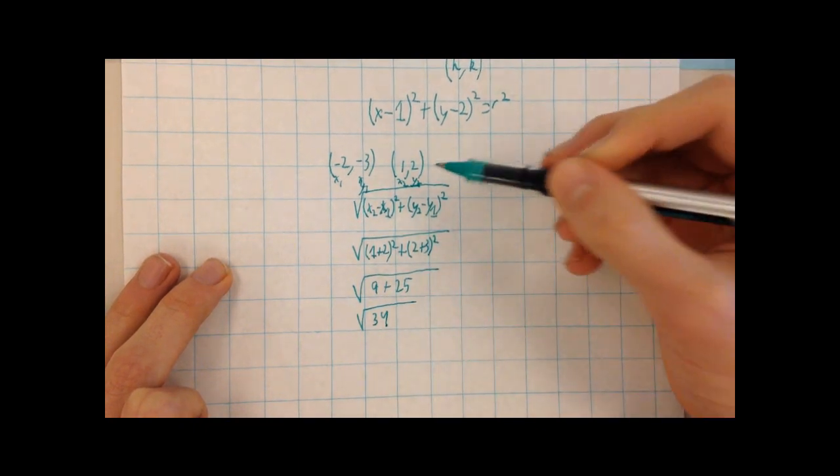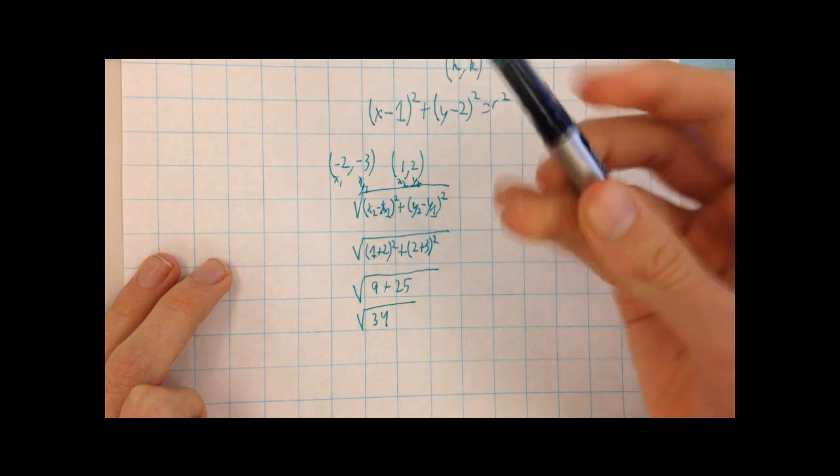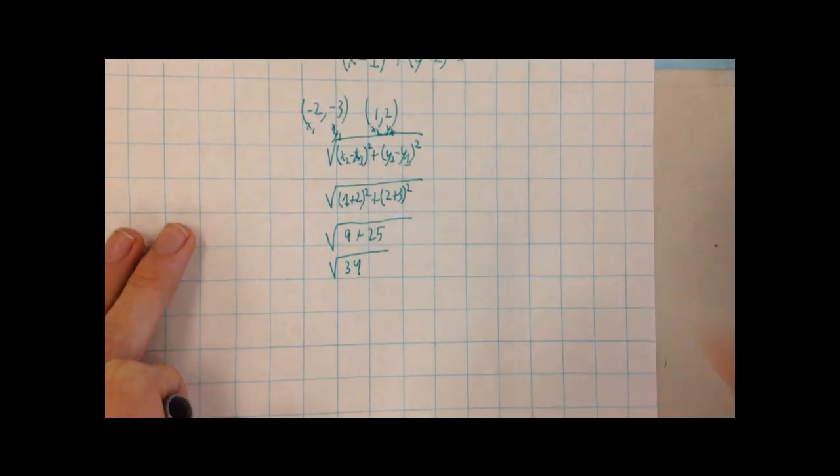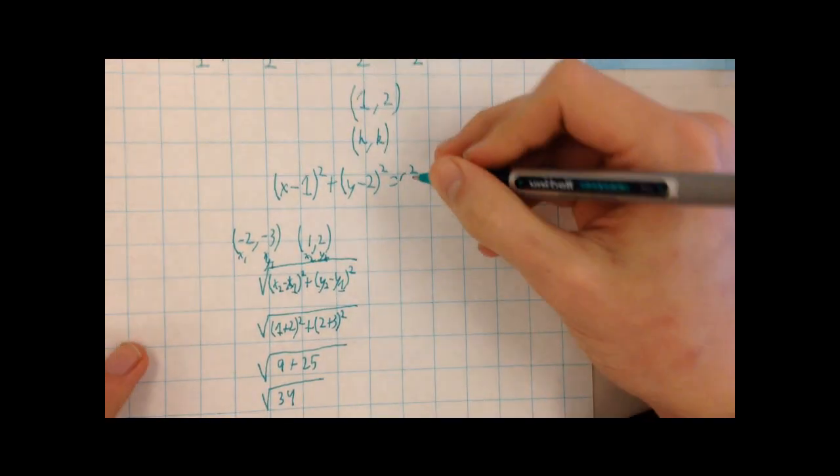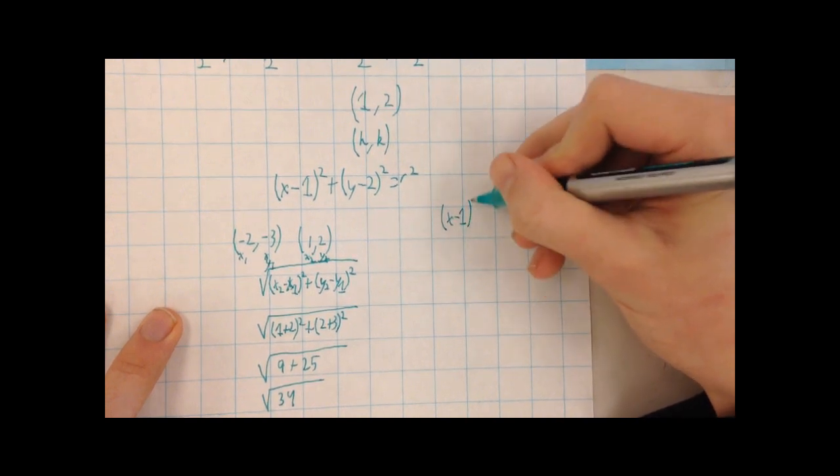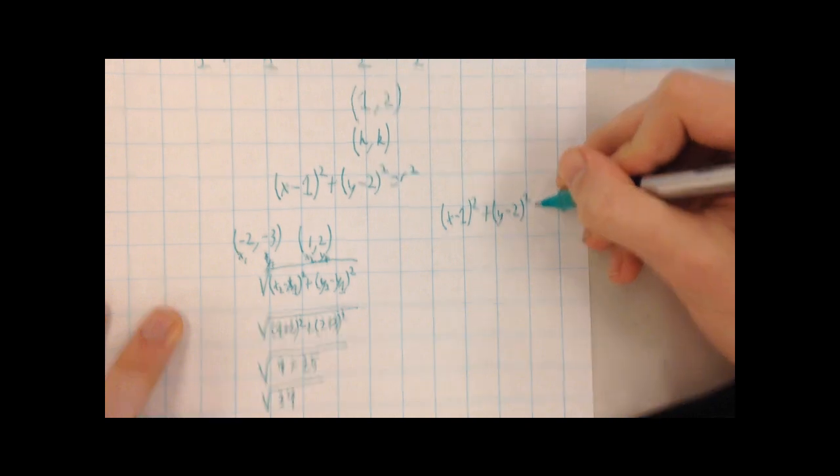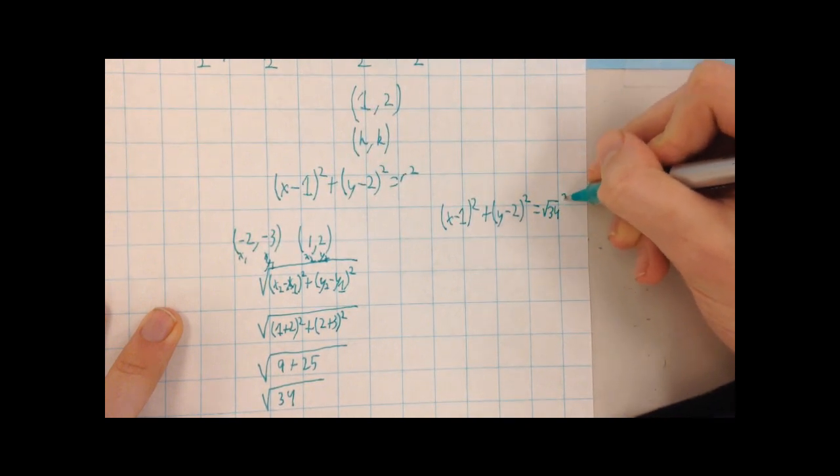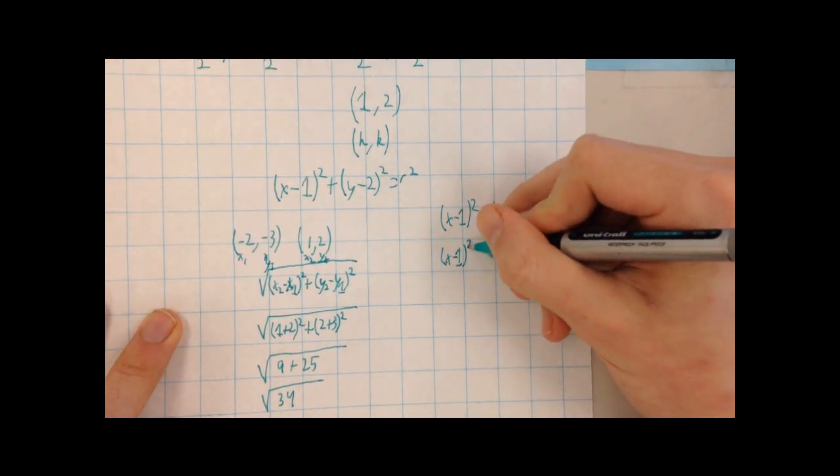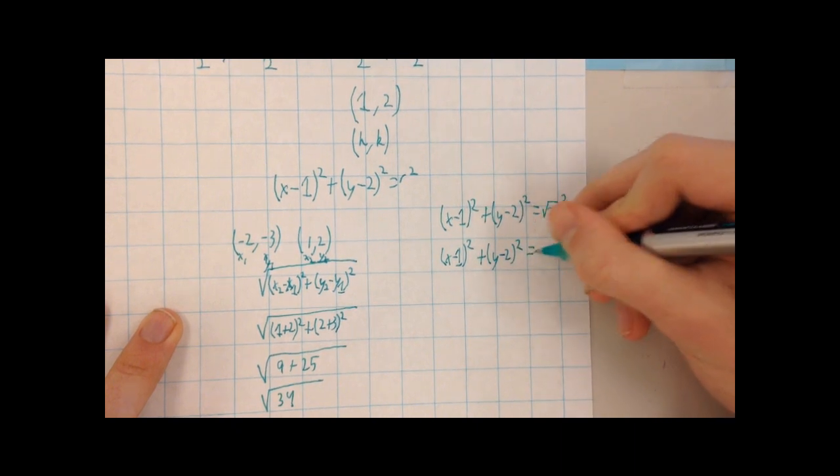So this is our radius. We found the distance between the midpoint and one of our endpoints to be the square root of 34. If we plug this back into our final answer, we have x minus 1 squared plus y minus 2 squared equals square root of 34 squared. And then we can simplify this, so it becomes x minus 1 squared plus y minus 2 squared equals 34.